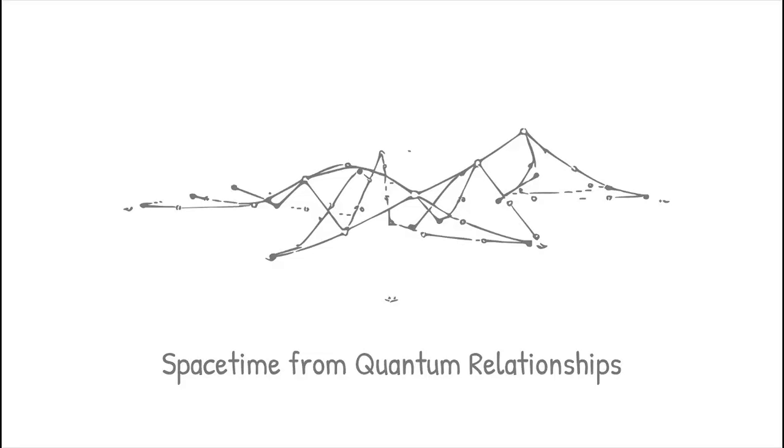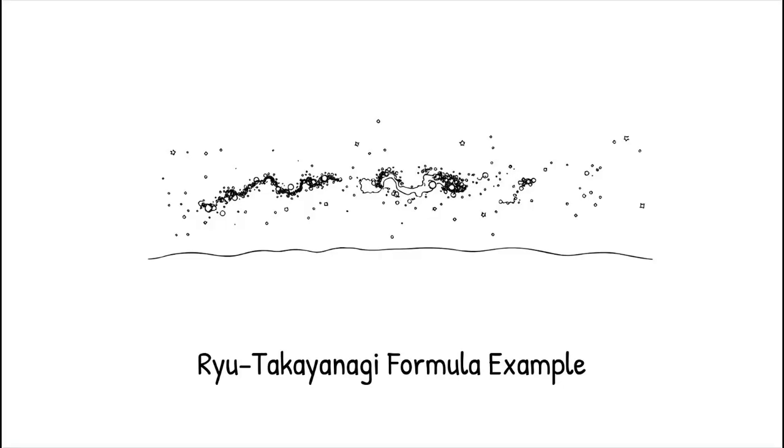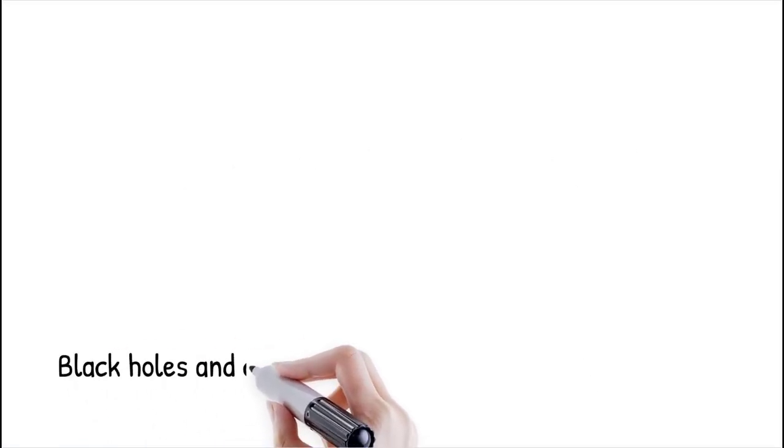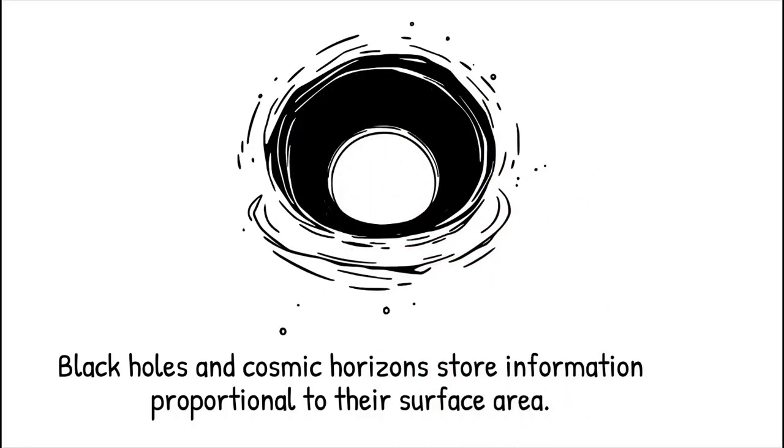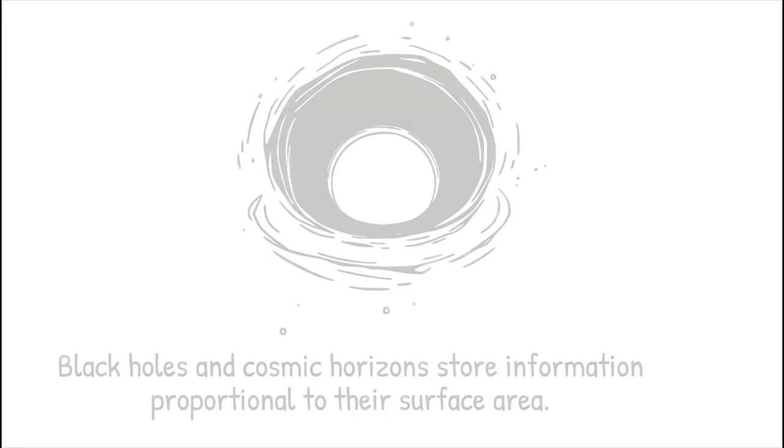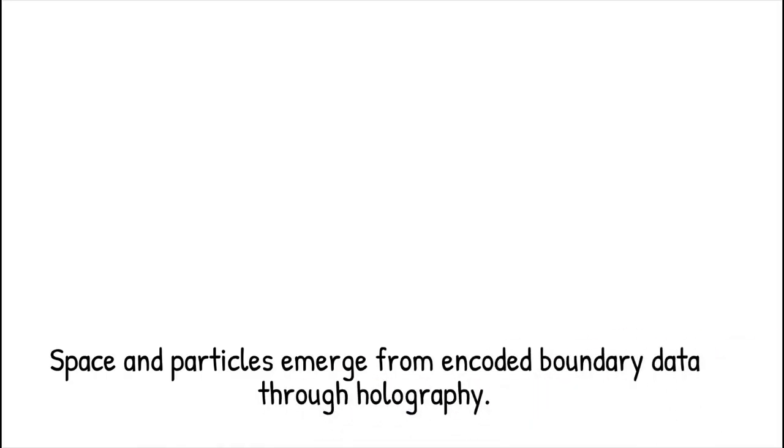The Ryu-Takayanagi formula relates the entanglement entropy of a boundary region to the area of a minimal surface in the bulk - like a tapestry woven from threads in two dimensions that appears as a textured 3D relief when backlit. Black hole thermodynamics taught us that a horizon's entropy is proportional to its surface area. Extending this concept to the entire universe implies that the cosmic horizon similarly stores all physical information. The bulk of space, including particles and fields, arises from this encoded boundary data via a holographic mapping.